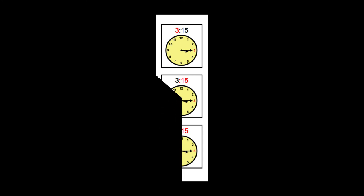Small hand past the three, big hand on the three, it's three fifteen. Small hand past the three, big hand on the nine, it's three forty-five.